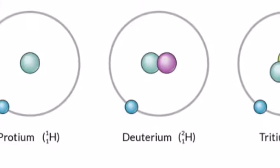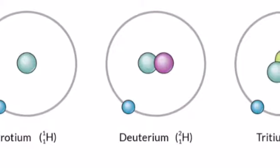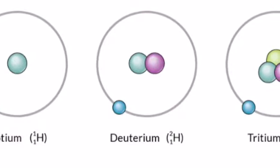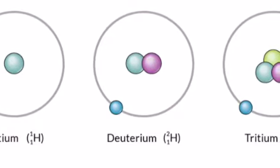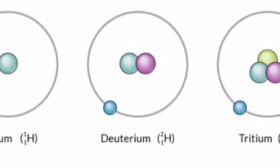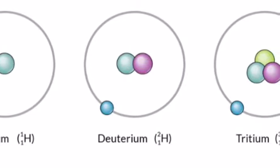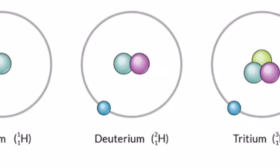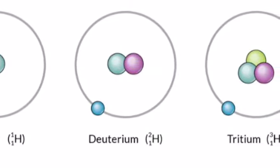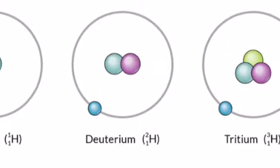Isotopes are atoms with the same atomic number but with a different mass number. That is to say, each atomic nucleus has the same number of protons but a different number of neutrons.